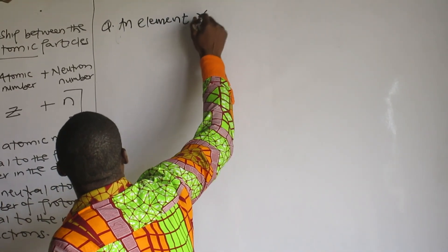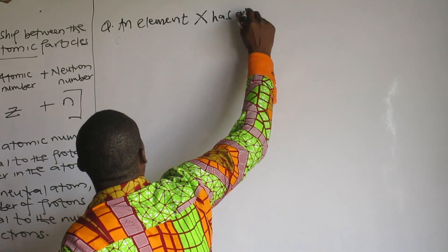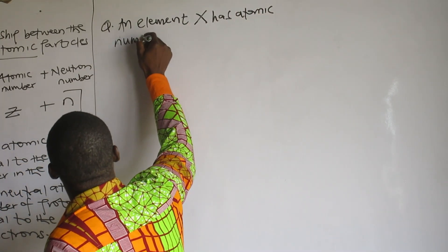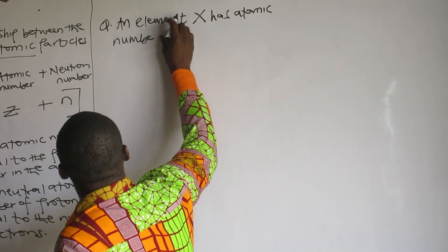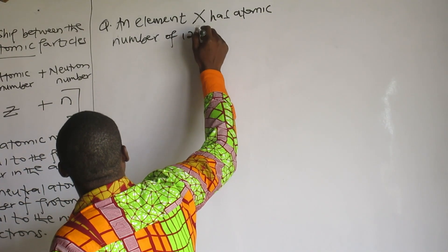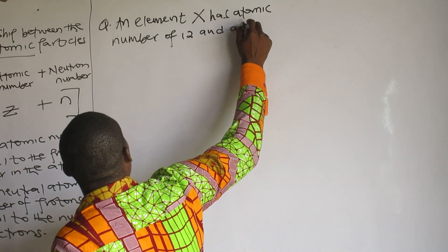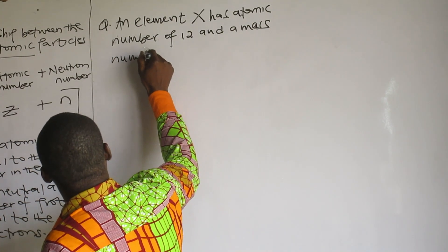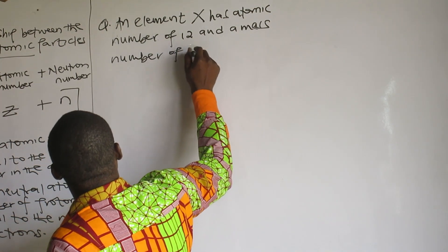An element X has atomic number of 12 and a mass number of 24.